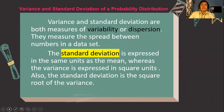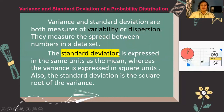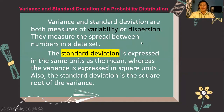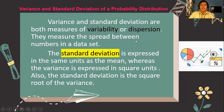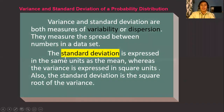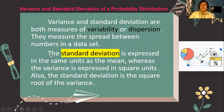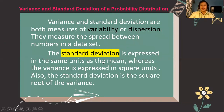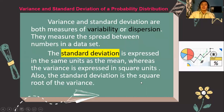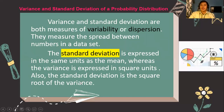The variance and standard deviation of a probability distribution describe the variability — the measure of dispersion, or how the data spread on a certain probability. The standard deviation is expressed in the same units as the mean, whereas the variance is expressed in square units. The standard deviation is the square root of the variance — that is how they are related to each other.